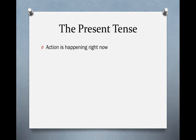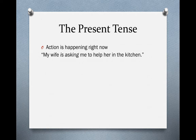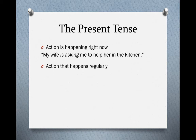The present tense normally indicates an action that is happening right now. So if I said 'my wife is asking me to help her in the kitchen,' that's something happening right now. In English this is often expressed with the verb 'be' plus the -ing form of the verb — 'my wife is asking.' I could also say 'my wife asks me to help her in the kitchen,' which is a little less clear but those are the two options to indicate action happening right now.